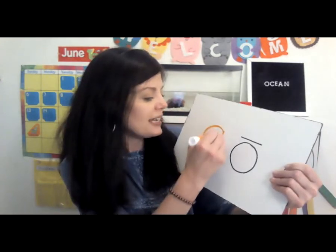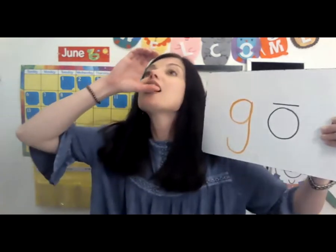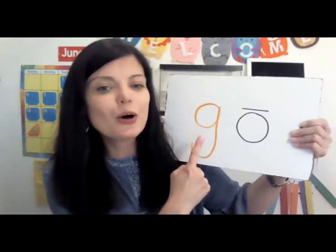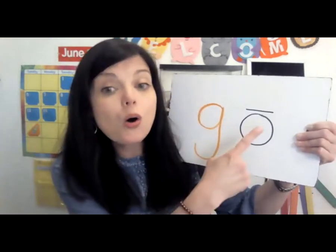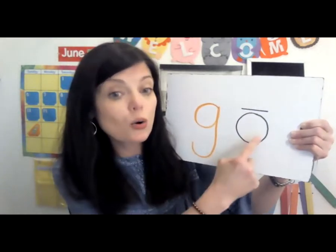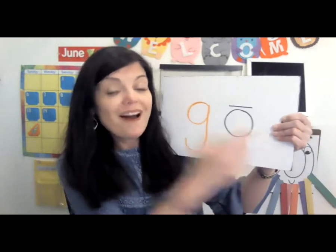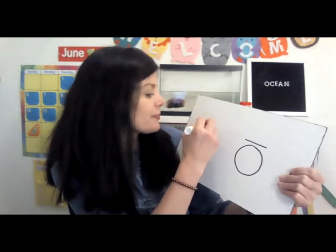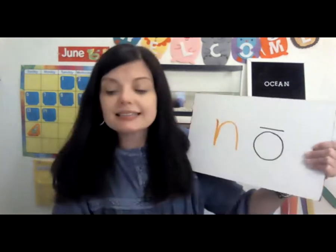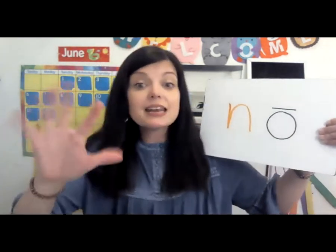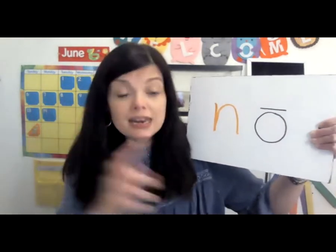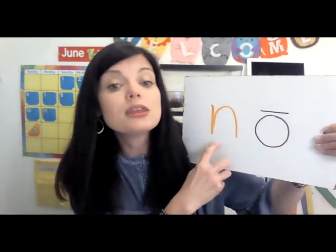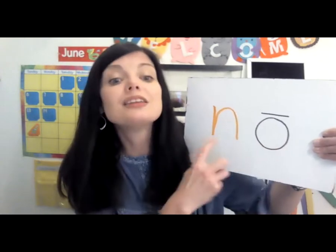Now let's change this S and make it a G. G says G. So here we go — G, O, go. You read another word! Let's try a letter N this time. Letter N says N. So here we go — N, O, no.